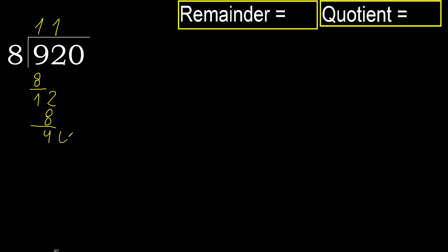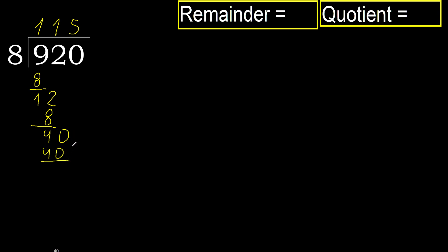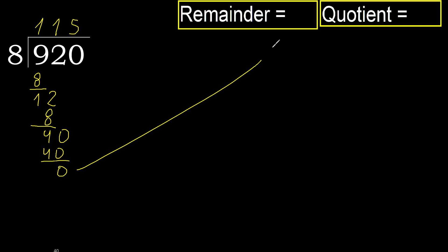Next: 40. 8 multiplied by 5 is 40, which is not greater. OK. Subtract: 40 minus 40 is 0. Next, there is no number, therefore finish it.